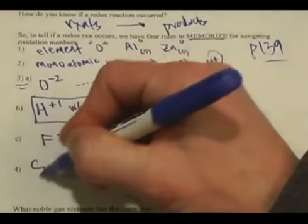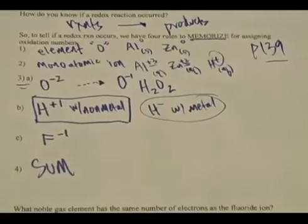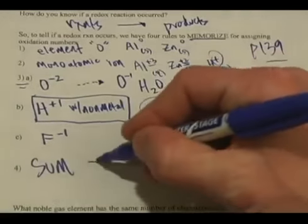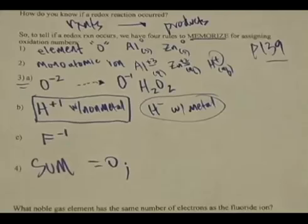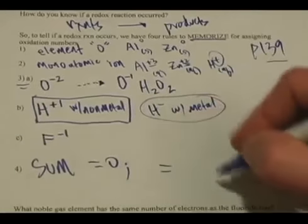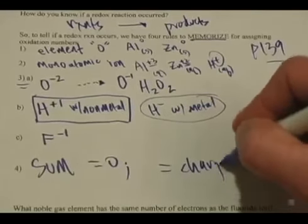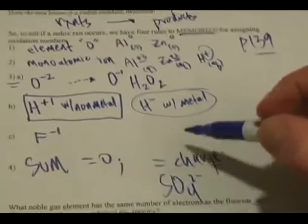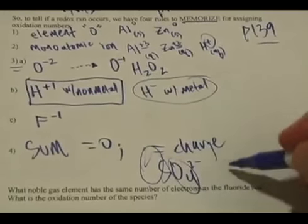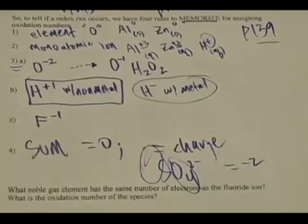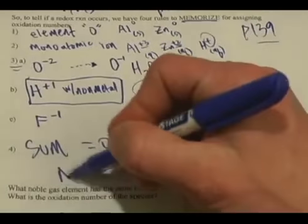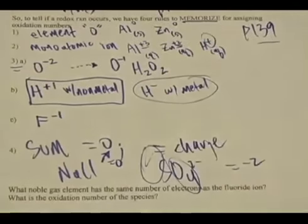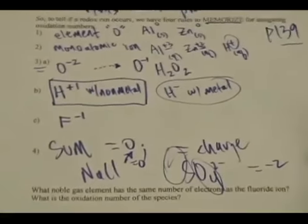Rule number four: the sum of the oxidation numbers in a neutral compound is always equal to zero, and the sum of the oxidation numbers of an ion always adds up to equal whatever the charge is on that ion. For example, if it's SO₄²⁻, the sum of sulfur plus four oxygens has to equal negative two. The sum for NaCl has to equal zero because it's a neutral compound.